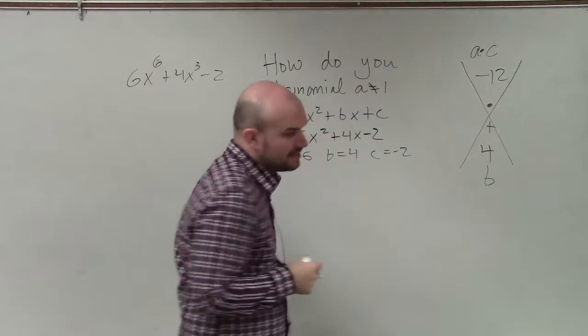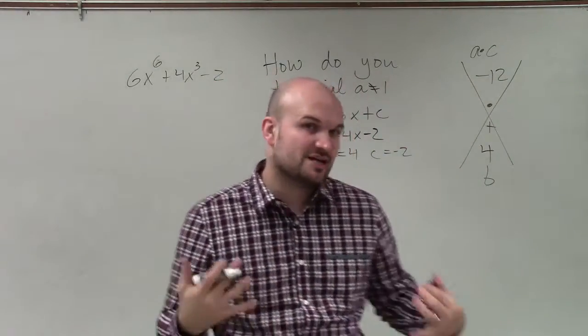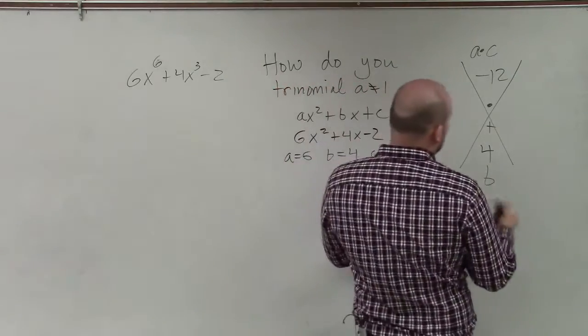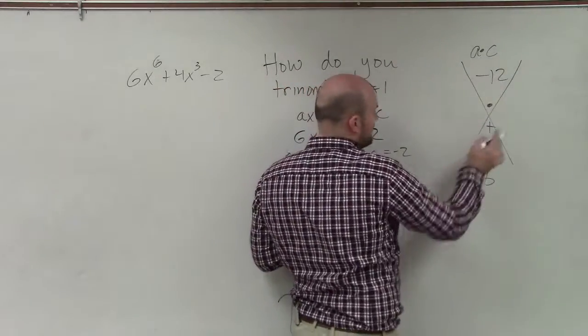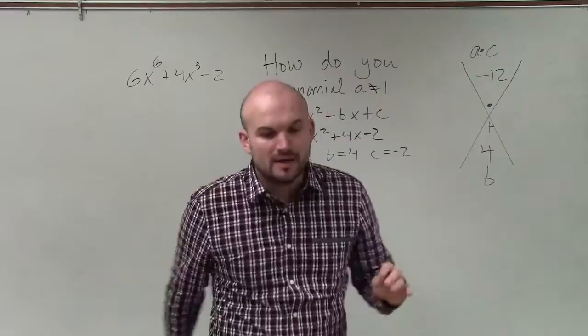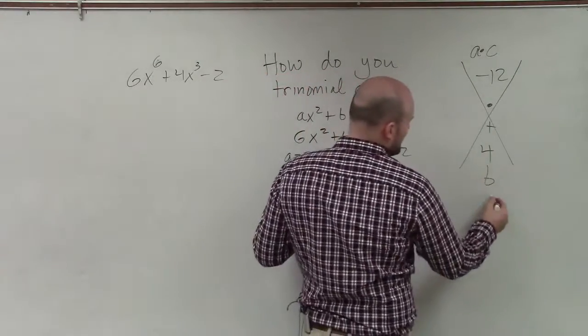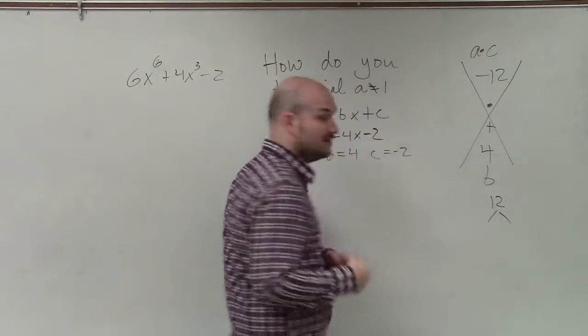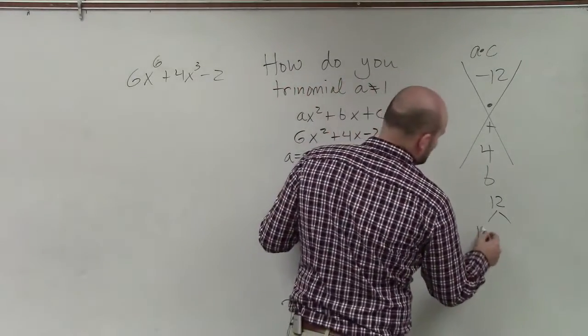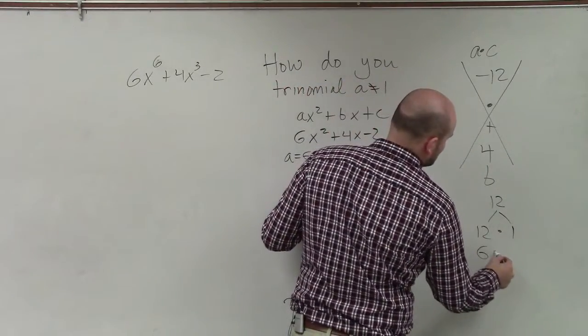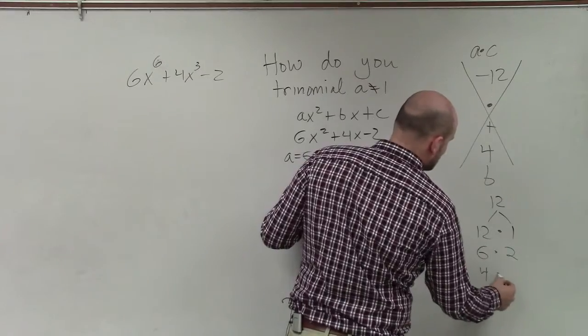When continuing this, we need to find our two factors. We need to find our two numbers that are going to multiply to give us -12, add to give us 4. Before I even get into worrying about negative and positive numbers, just figure out the factors of 12. And it's preferable if you can do this in your head. 12 times 1, 6 times 2, 4 times 3.